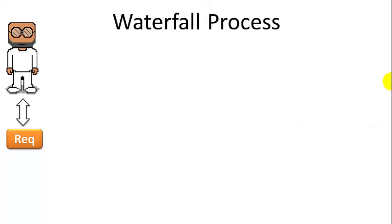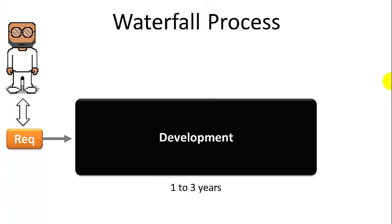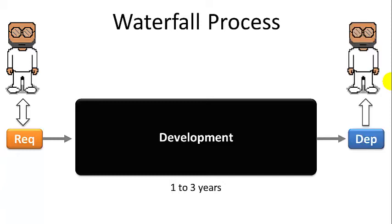The waterfall process starts by working closely with the customer to define his requirements in detail. After that, the customer has little or no interaction with developers. The development cycle is like a black box to the customer. He provides all his requirements, waits a long time, and then gets finished software delivered that hopefully meets his needs.